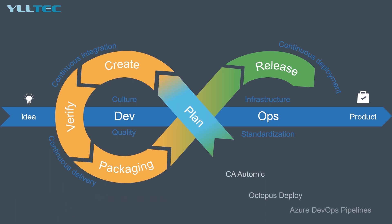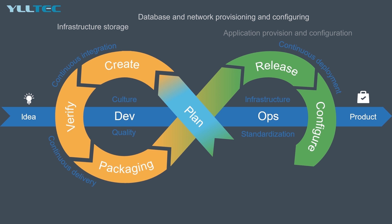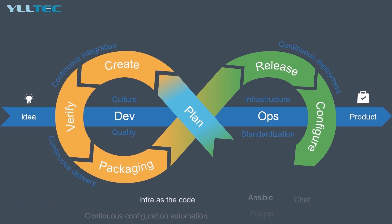Now the application is released, and we need to make sure it runs smoothly. We do that by looking at the configuration stage of the DevOps toolchain. Once software is deployed, there may be additional IT infrastructure provisioning and configuration activities required. Specific activities include infrastructure storage, database, and network provisioning and configuration, as well as application provisioning and configuration. Disciplines include configuration management, continuous configuration automation, and infrastructure as code. Tools include Ansible, Chef, Puppet, and Salt.